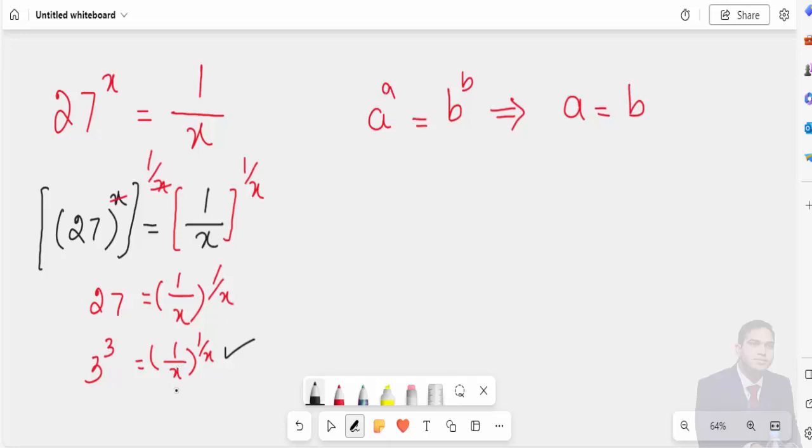b is 1 over x and the power is 1 over x. So from this equation you can write 1 over x is equal to 3. Sorry, 3. Rewriting this step.